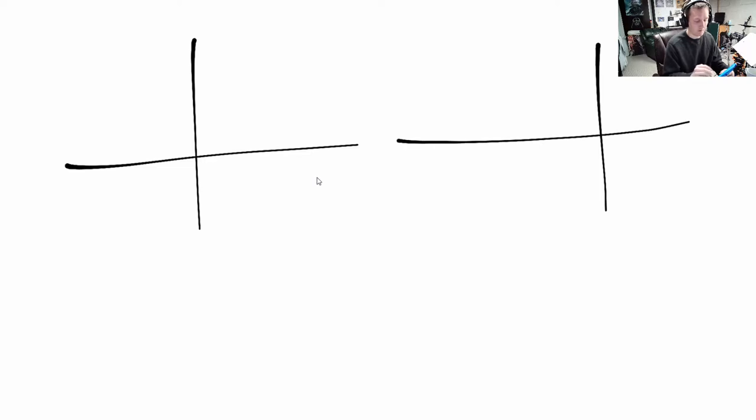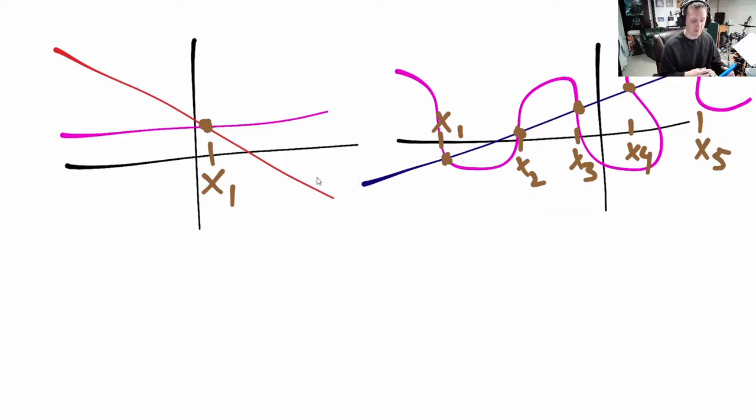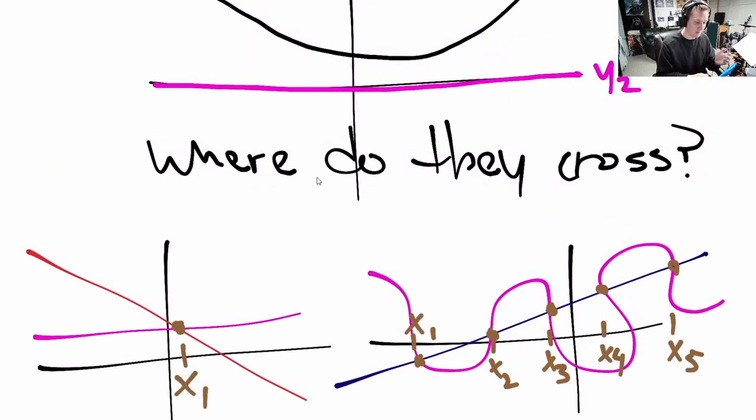I've illustrated before with my previous examples that sometimes there's just one solution, right? I gave the example of a line like this and a line like this where they crossed at just one point, so there's just one x value where they agree. I've also given examples of lots of solutions. So here's one graph of something, here's a graph of something else. There can be one solution, there can be many solutions, there can be no solutions.